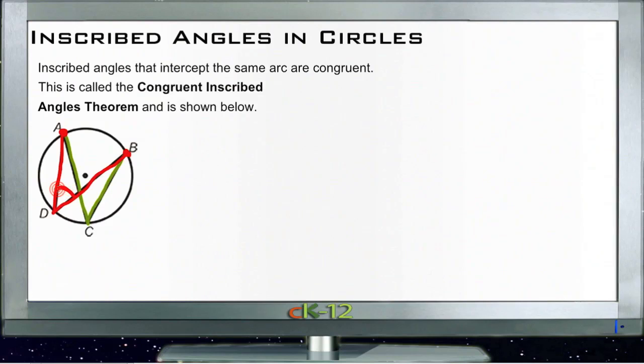These two angles are going to be identical because the arc, or the degree measurement of the inscribed angle, is defined directly by the length of the arc on the opposite side. This angle right here will be exactly half of the portion of the circle that the arc on the opposite side of the circle describes.